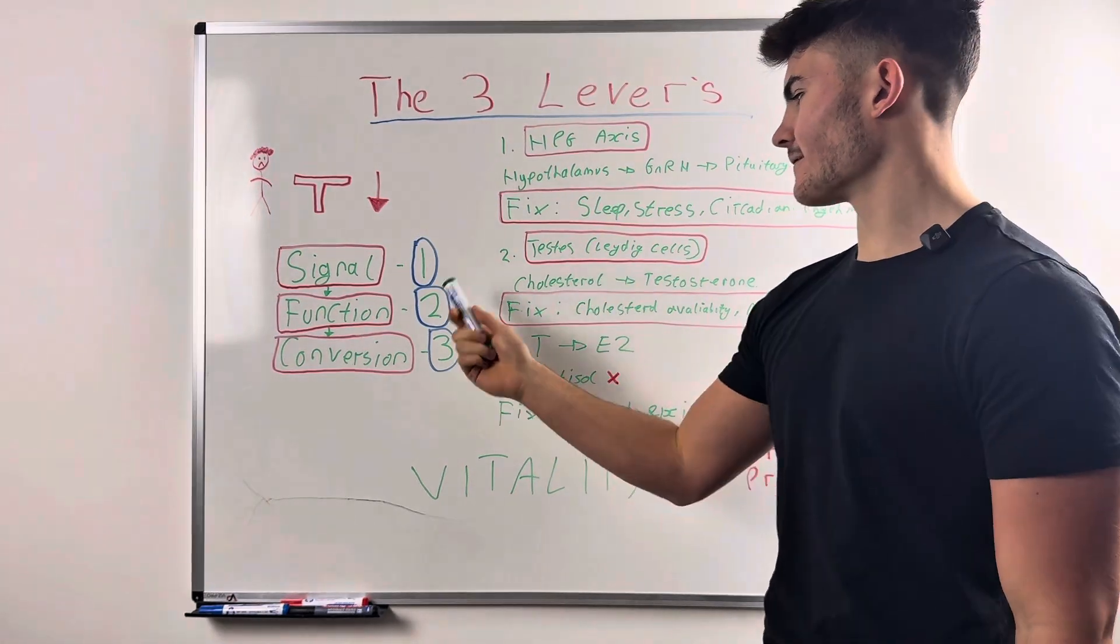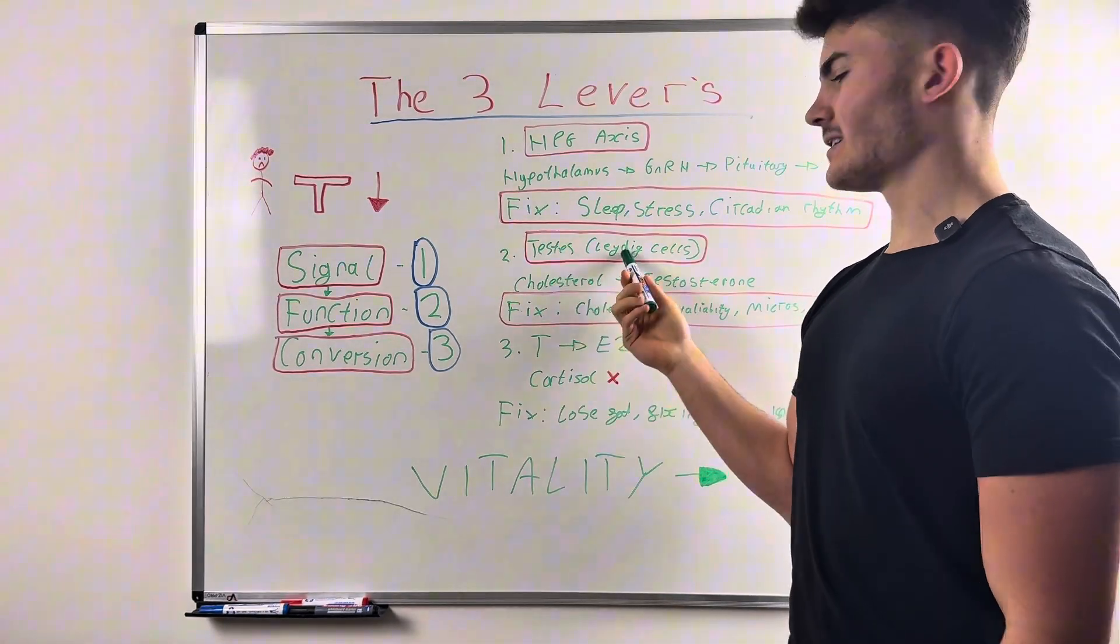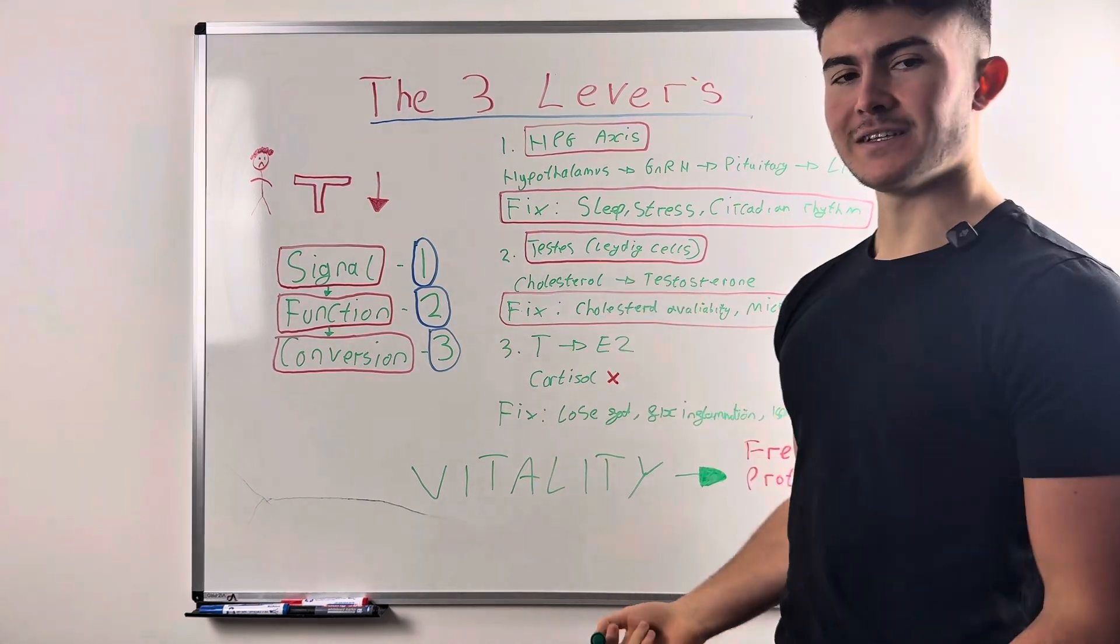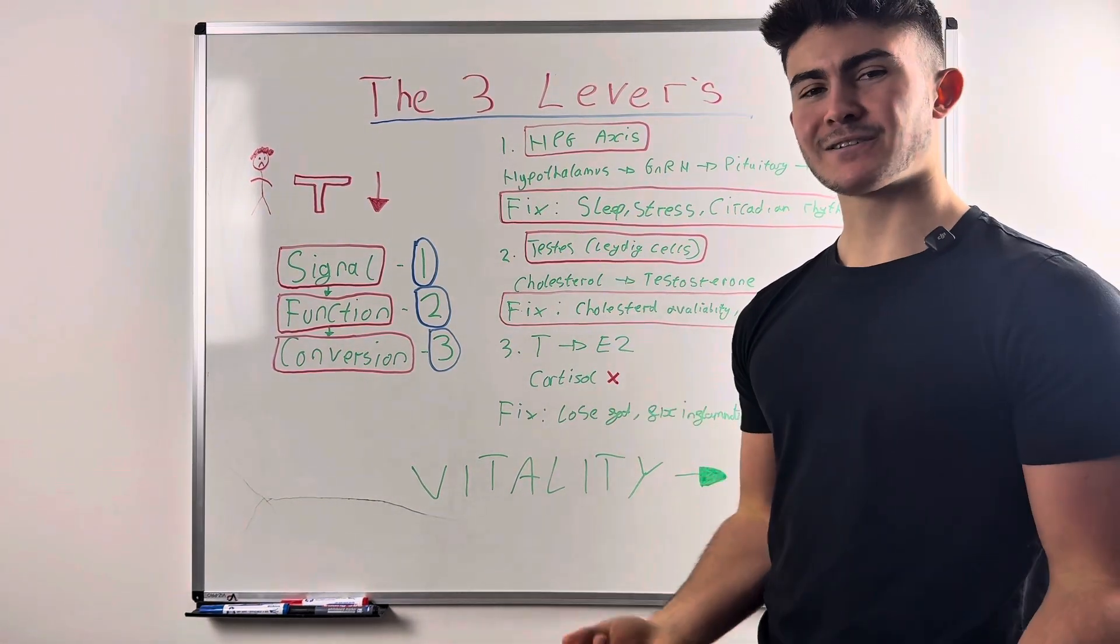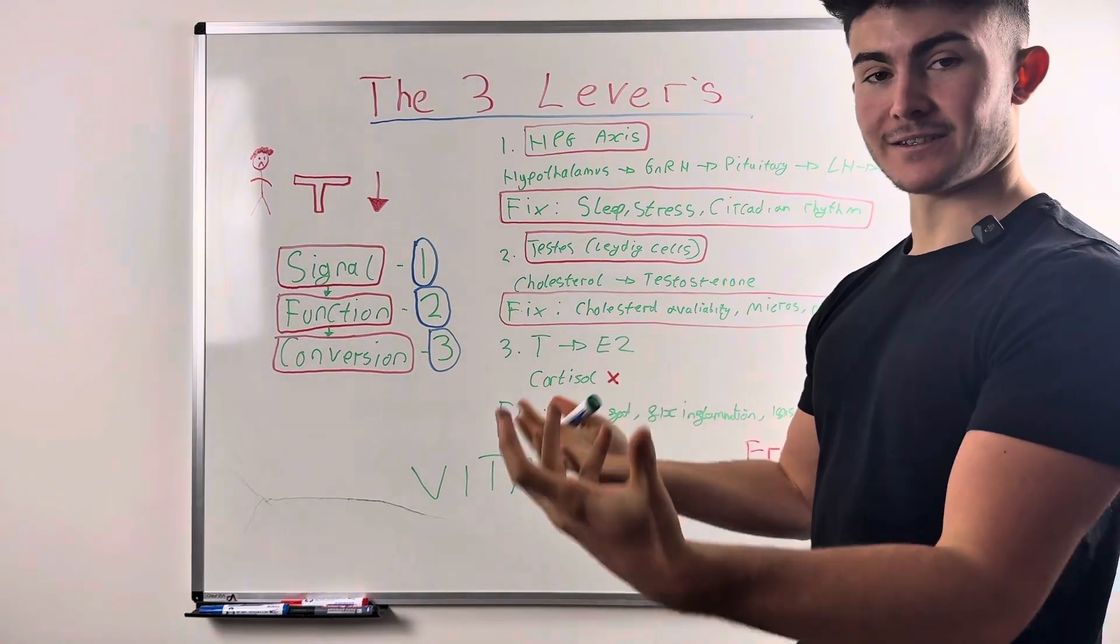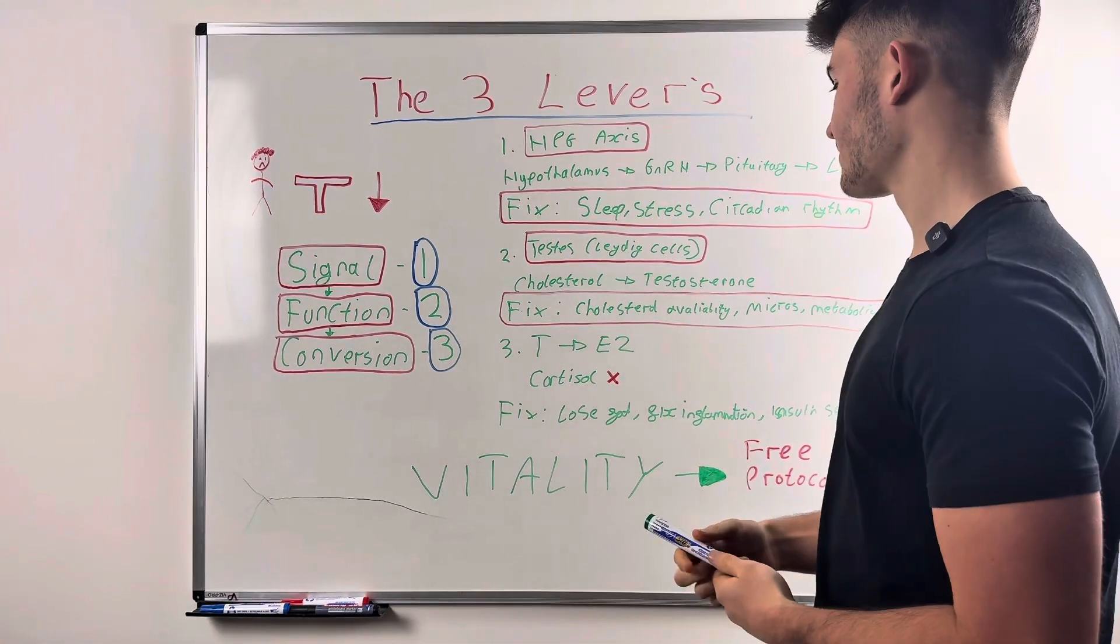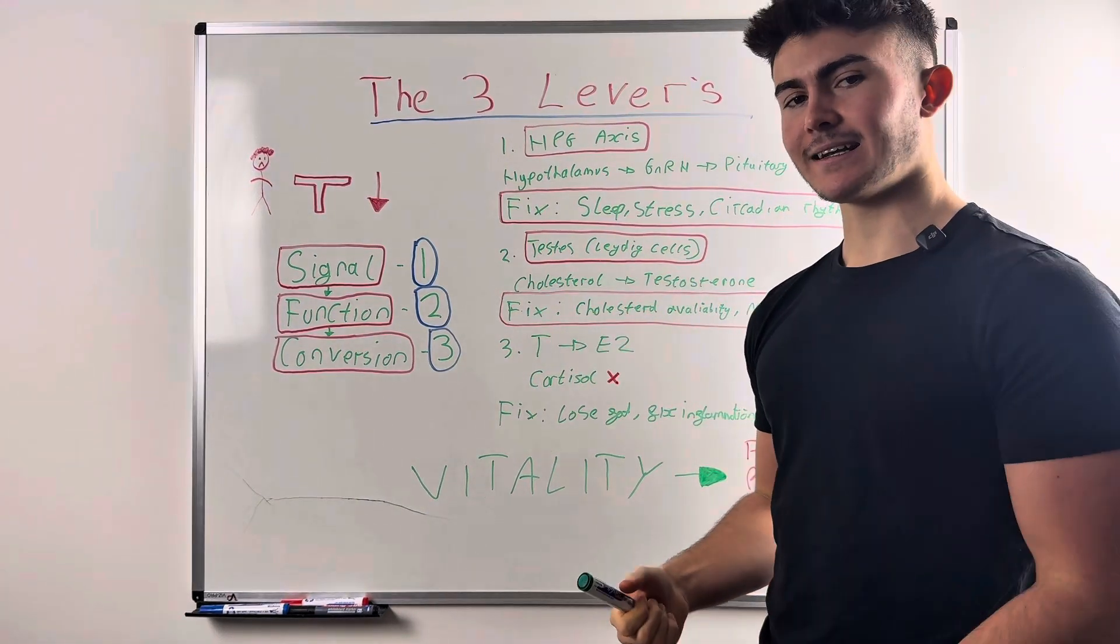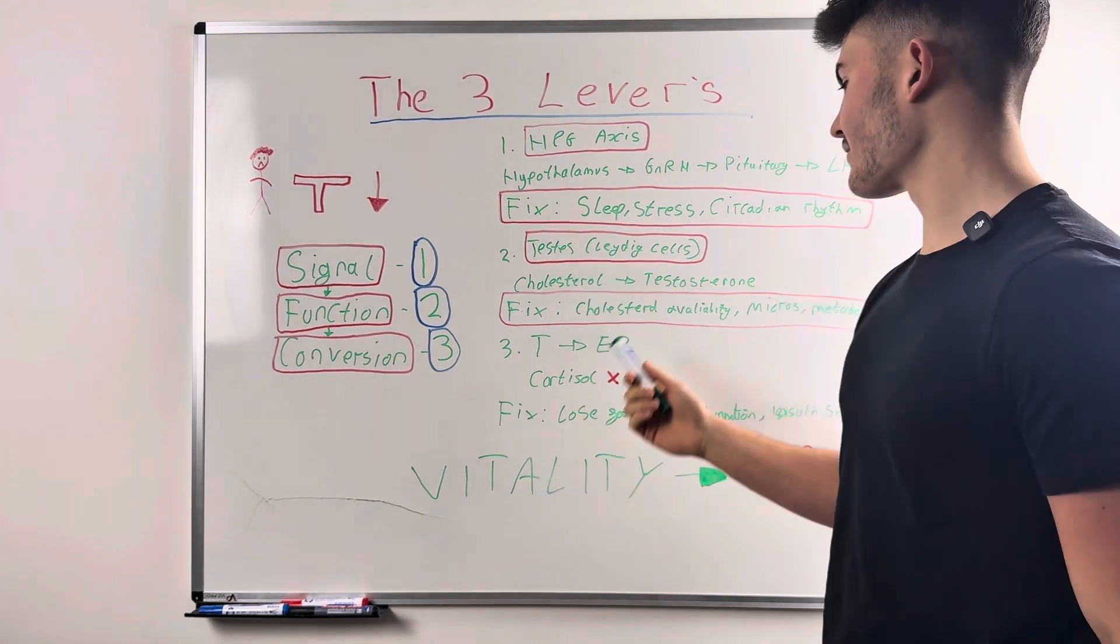Number two is the function. Your testes, your Leydig cells, your balls, whatever you want to call them. Leydig cells is the physiological term. You can think of it like a factory for your testosterone. This is where they're actually getting produced, where the testosterone and other steroid hormones are getting produced. Cholesterol is turned into testosterone in the Leydig cells, in the factory, your balls, whatever you want to say.